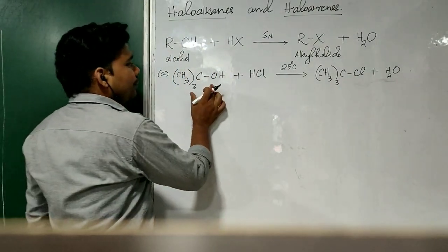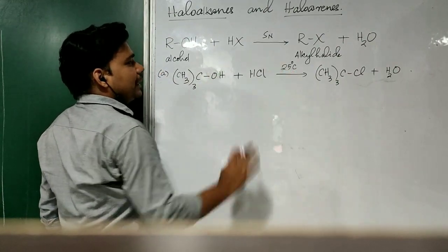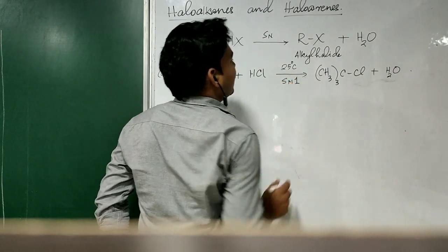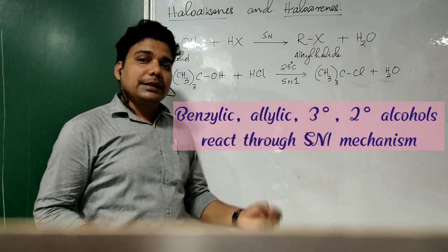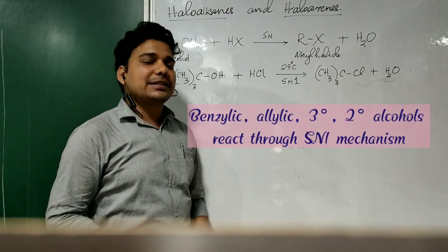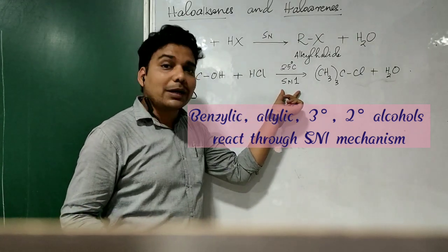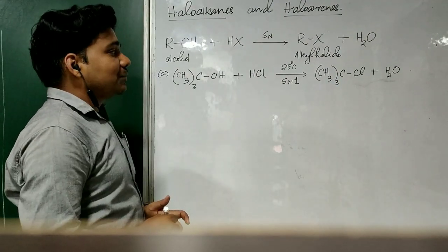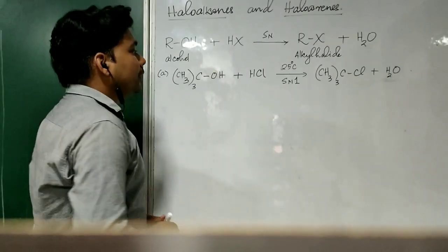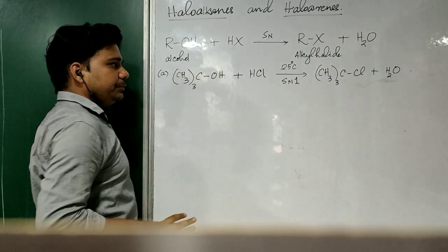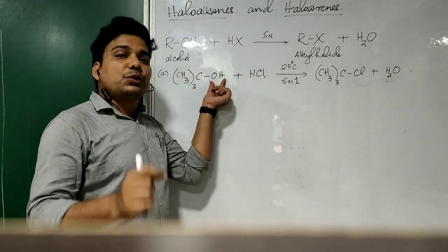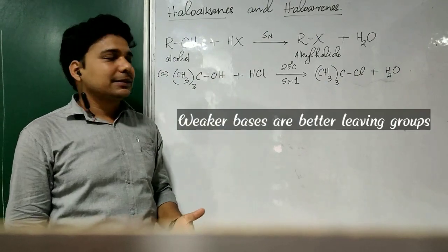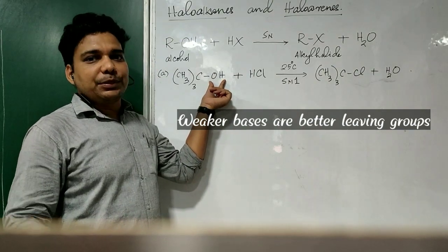If we try to explain the mechanism of this reaction, this is an SN1 reaction. As I have told you, tertiary alcohols, secondary alcohols, benzylic alcohols, and allylic alcohols — these substrate molecules undergo SN1 reactions. That means the reaction involves the formation of a carbocation intermediate. The leaving group here is OH. OH minus is one of the weaker leaving groups as it is a strong base, so its leaving ability is lower.